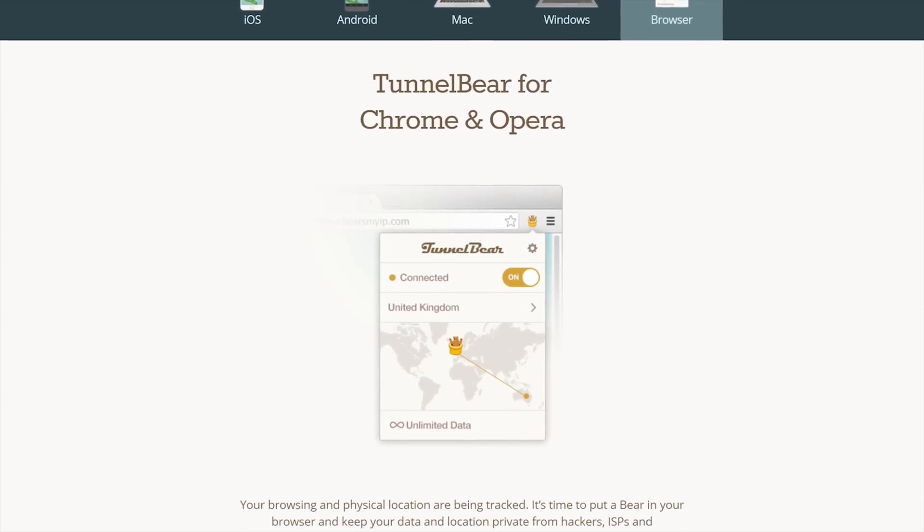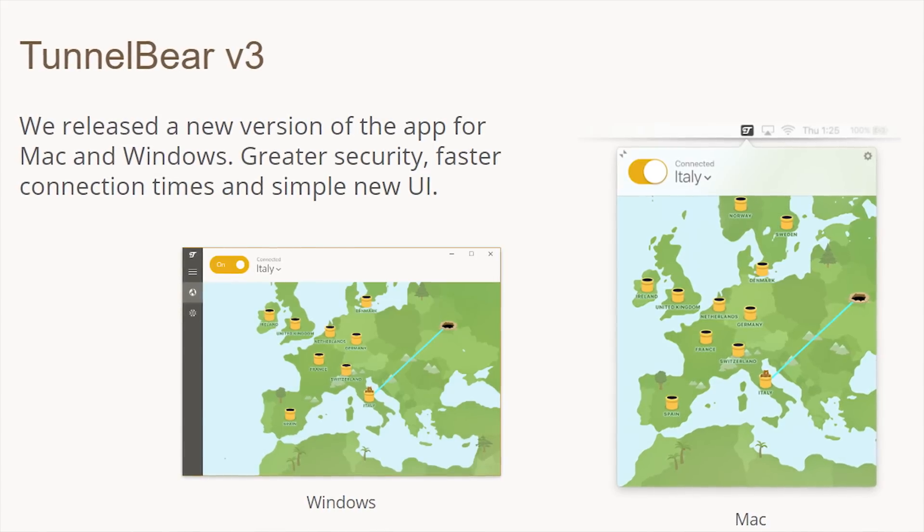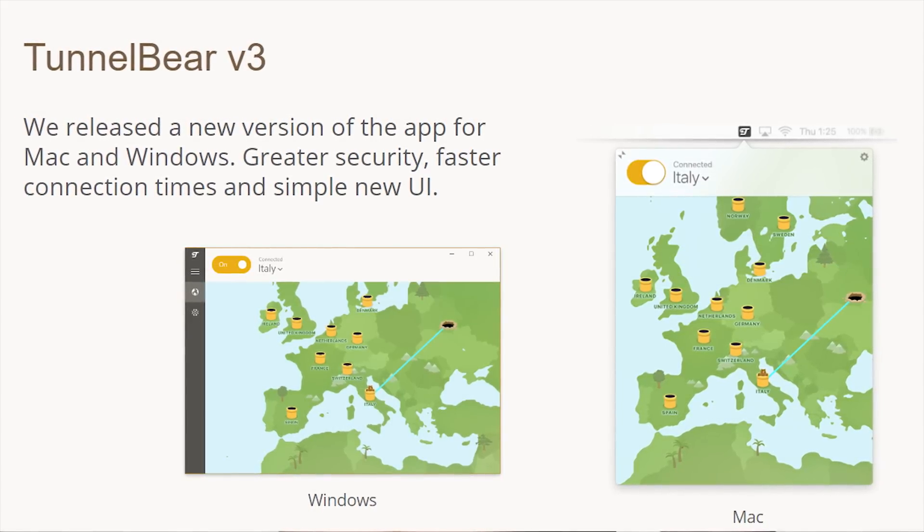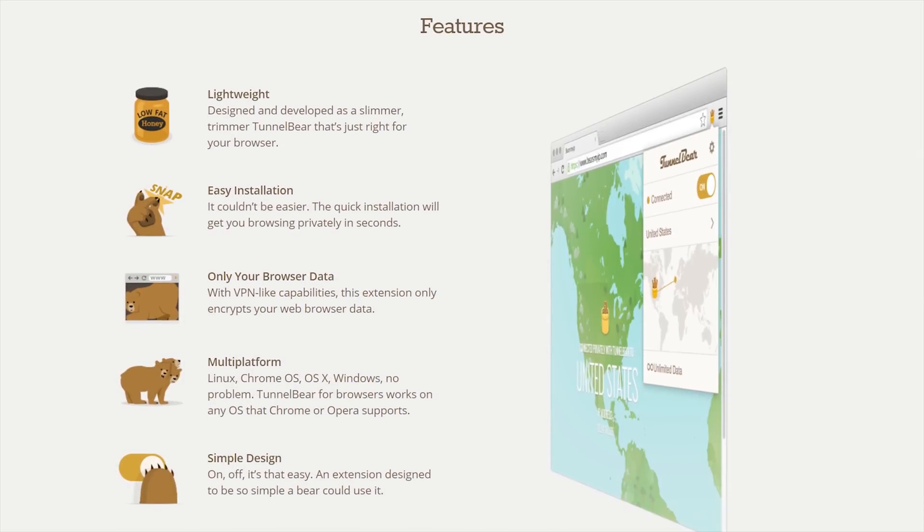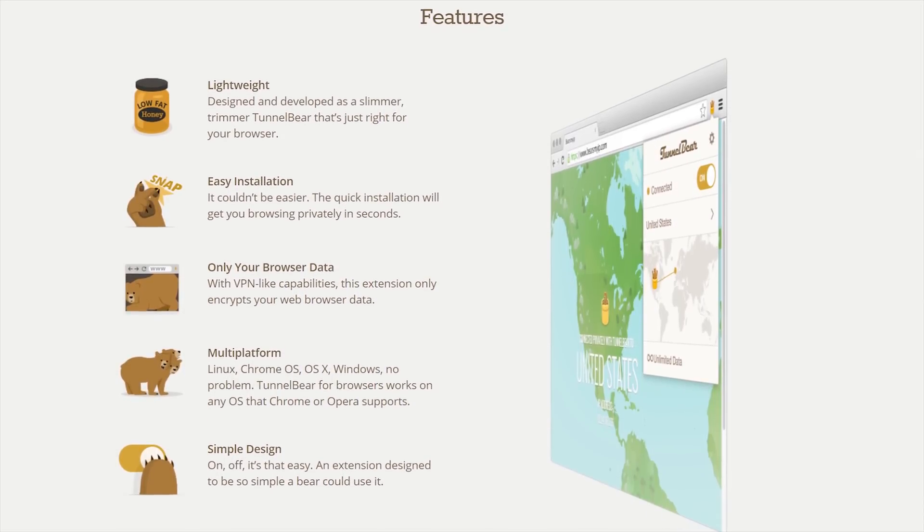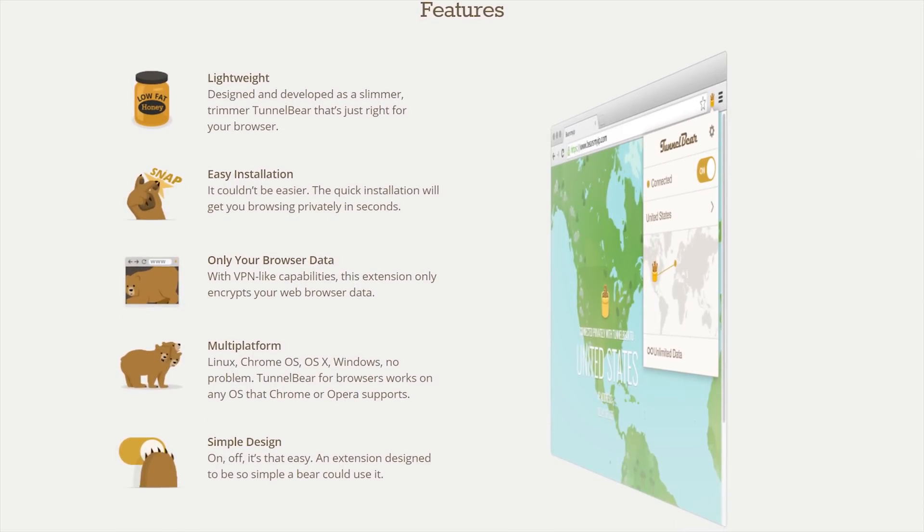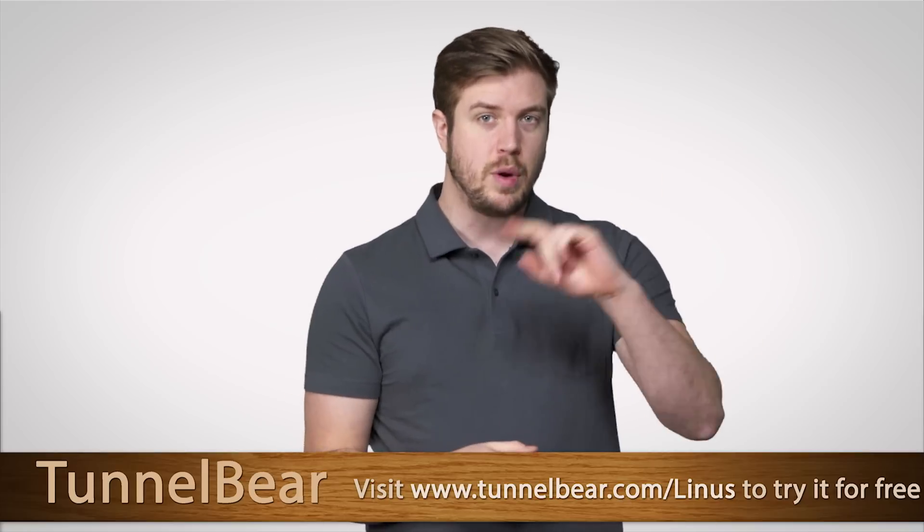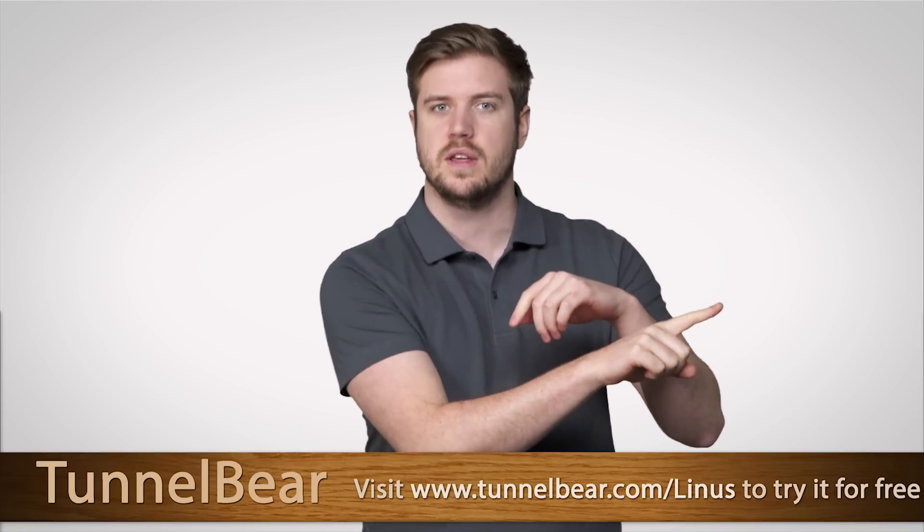Just choose a country in the app, turn TunnelBear on, and watch as your bear tunnels your internet connection to your new location. When you do turn TunnelBear on, two things happen. Your connection gets encrypted with AES 256-bit encryption, and your public IP address gets switched to one in that new country that you chose.